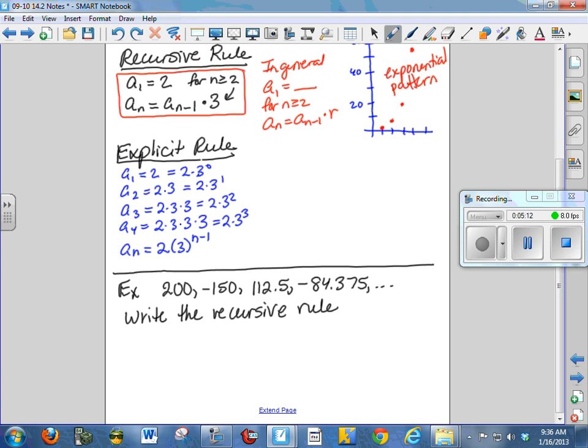So there's our explicit rule. In general, we would say for the explicit rule that a sub n is equal to a sub 1 times r to the n minus 1. And hopefully, some of these little rules will look familiar to you from Algebra 2.